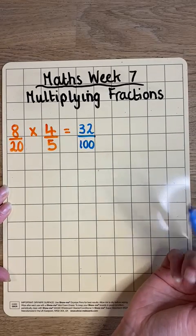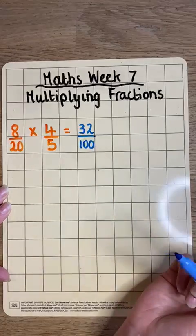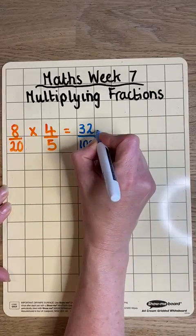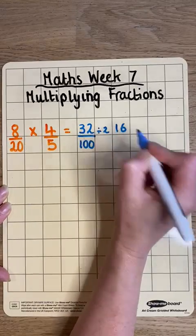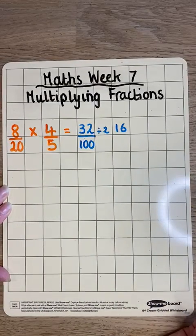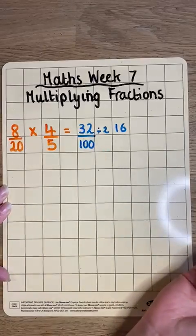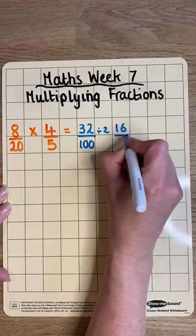Because they're both even numbers, I can divide these by 2. So 32 divided by 2 is 16, so that's been halved, and 100 divided by 2, or halved, is 50.